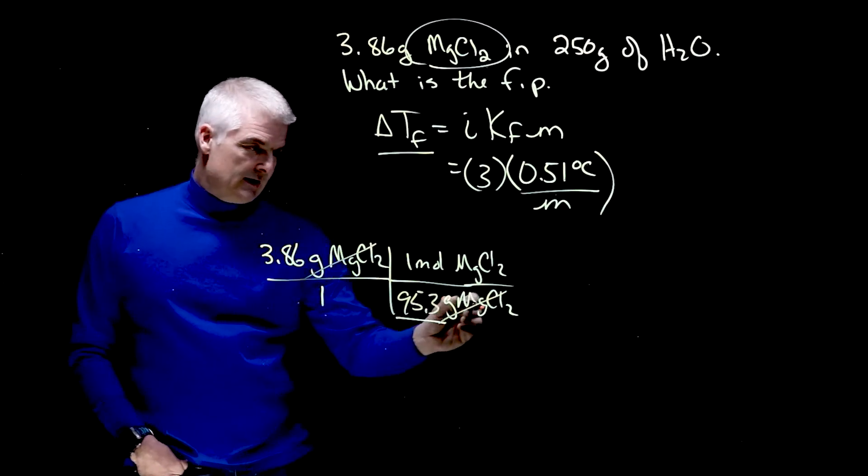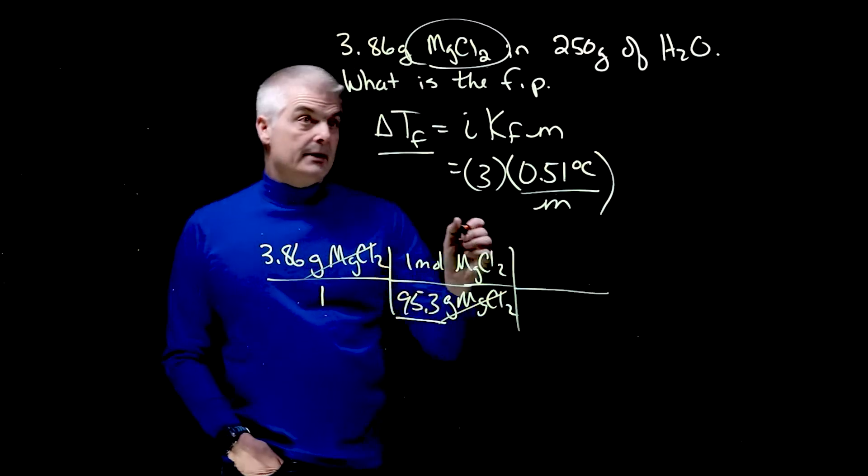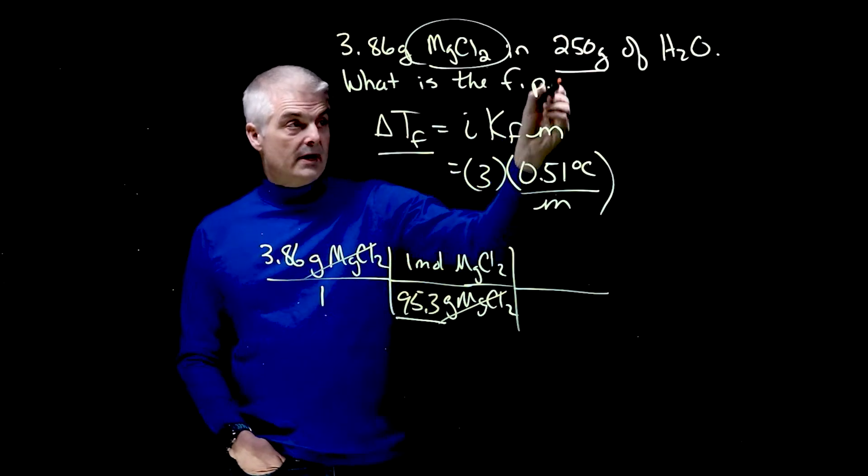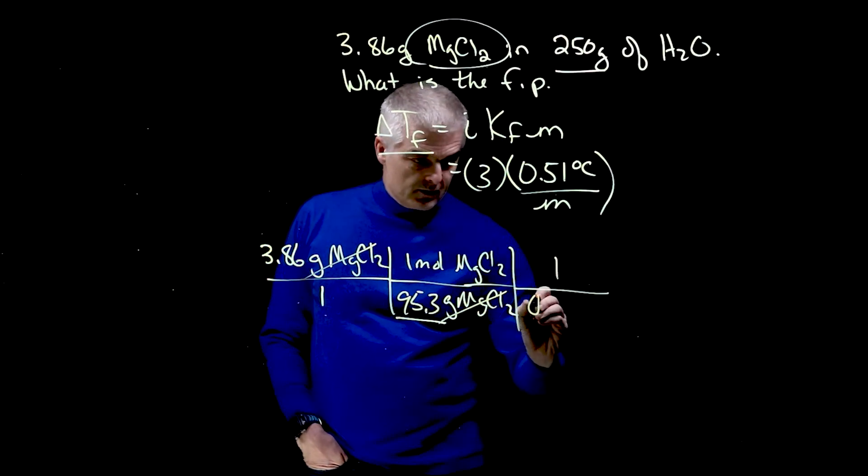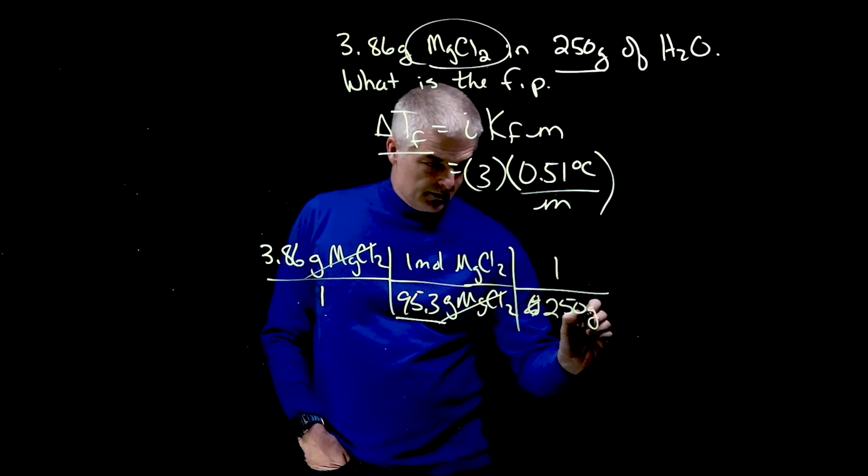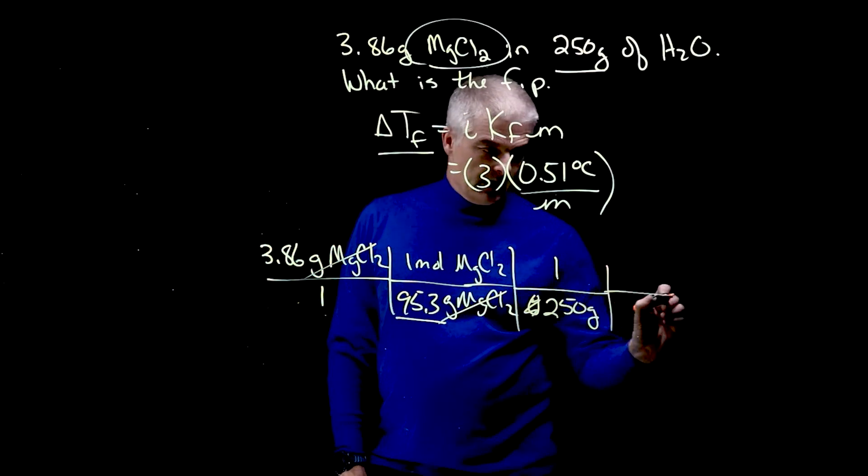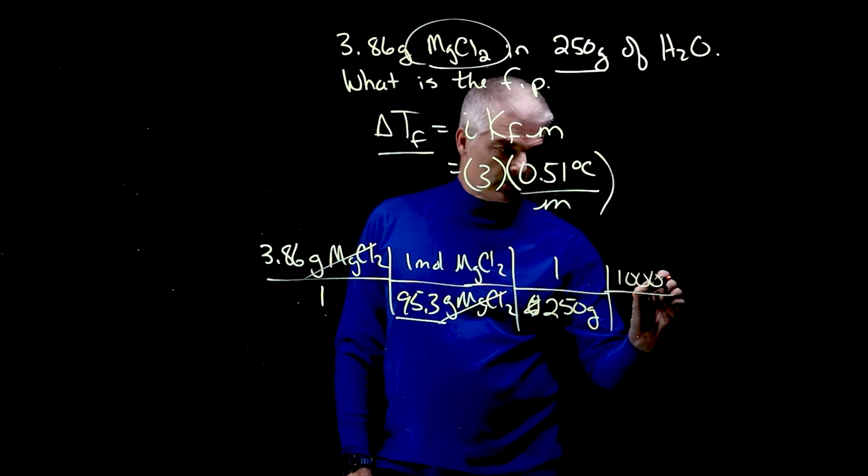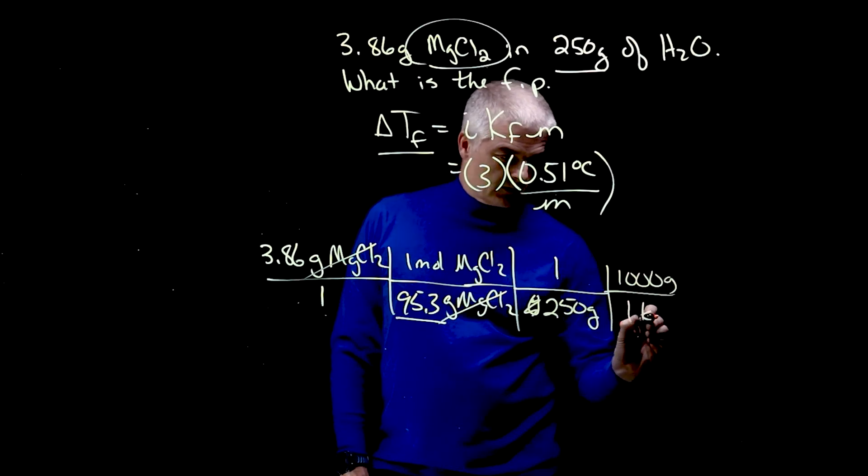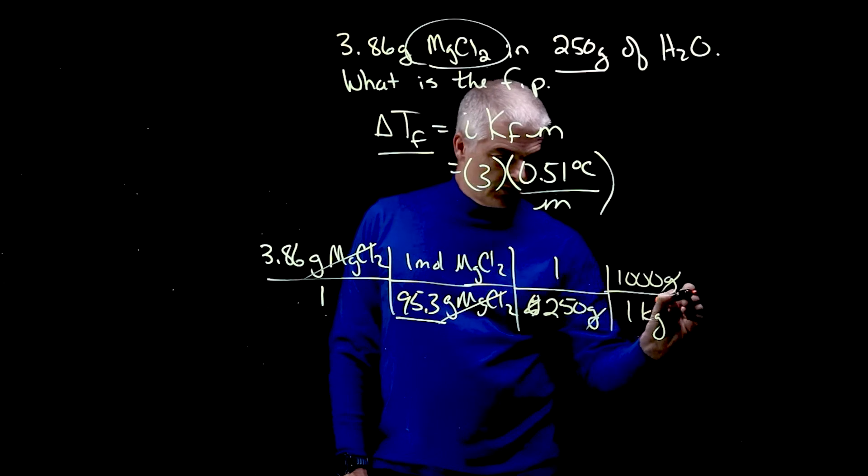So I get 95.3 grams. The grams of MgCl2 cancel. And now I want to get it per kilogram. Now I've got grams, so I'll say 1 over 250 grams. But I want it per kilogram. And then I'll say there's 1,000 grams in 1 kilogram. You need to know these things.